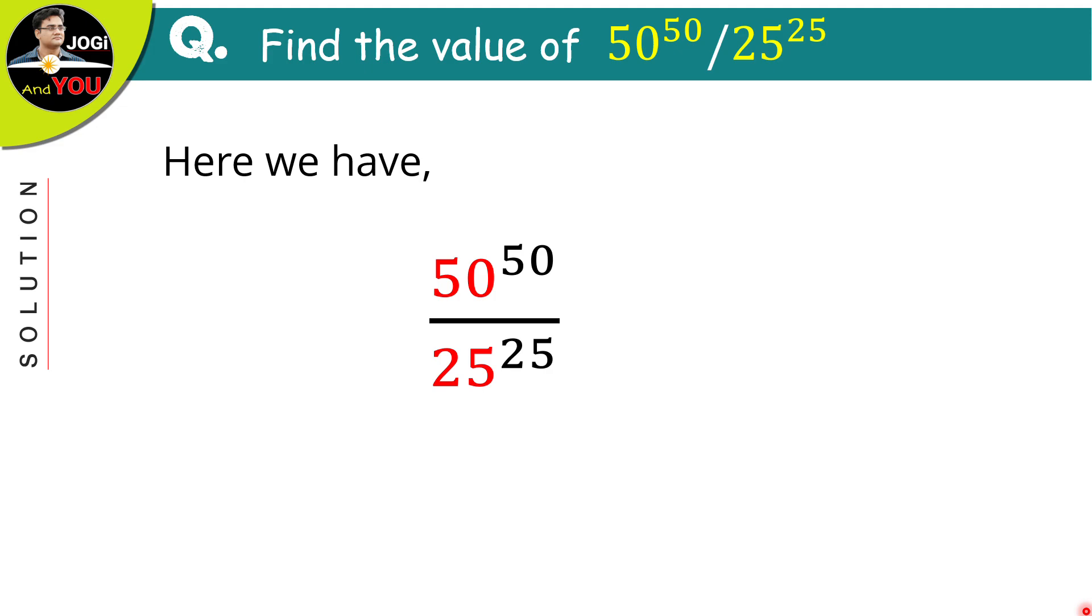Okay, the first thing I am going to analyze is that here in the numerator, the exponent is 50 and in the denominator, the exponent is 25. I will rewrite this power 50 in such a way that is in the numerator making the exponent 25 appear here.